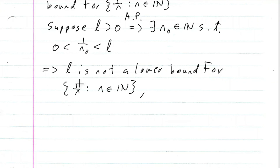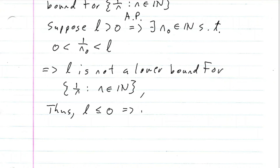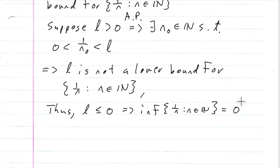Thus L must be less than or equal to zero, which implies that the infimum of {1/n | n ∈ ℕ} does have to be zero. And that is the proof.